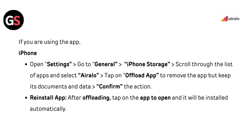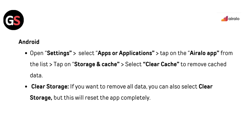If you are using the app, on iPhone open Settings and go to General, then iPhone Storage. Scroll through the list of apps and select AirLo. Tap Offload App to remove the app but keep its documents and data, then confirm the action. To reinstall, tap on the app and it will be installed automatically. On Android, open Settings, select Apps or Applications, and tap on the AirLo app. Tap on Storage and Cache, then select Clear Cache to remove cached data. You can also select Clear Storage, but this will reset the app completely.